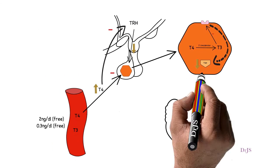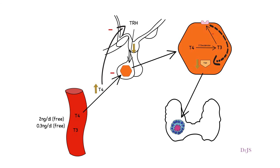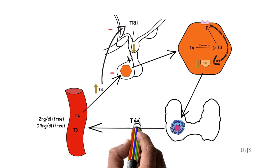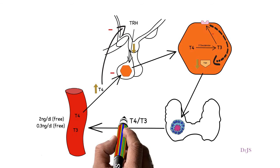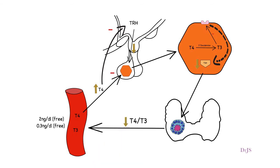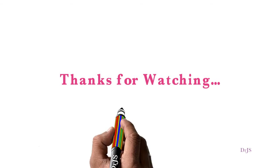This decreased production of TSH causes decreased production of T3 and T4 from the follicular cells of thyroid gland. This is all about feedback inhibition of anterior pituitary gland by free T4. Thanks for watching and stay tuned.